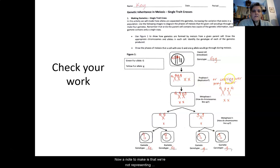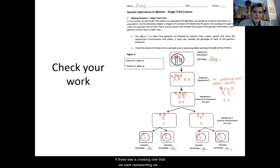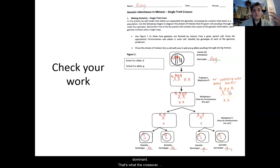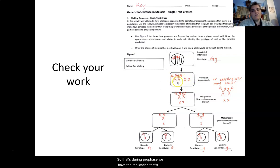A note to make is that we're not representing crossing over, which is one of the possible ways that we get variation in traits. If there was a crossing over being represented, we would see the chromosomes essentially bump up against each other and genes swap. With that swap, you would get a dominant and a recessive — because that's the genotype we started with — and then the recessive and dominant. That's what the crossover would look like. We didn't get a crossover, so we're going with an exact replication here. That's during prophase, with the replication happening just before that. You've got your two big G's, two little g's, and two small chromosomes.